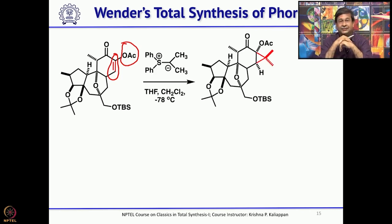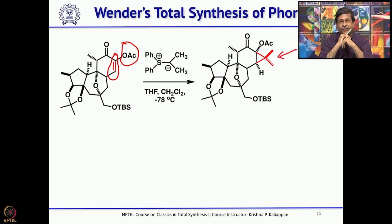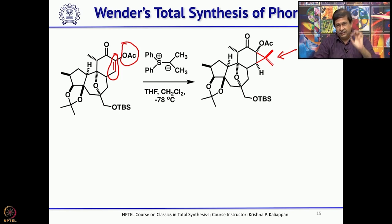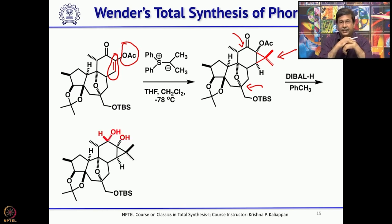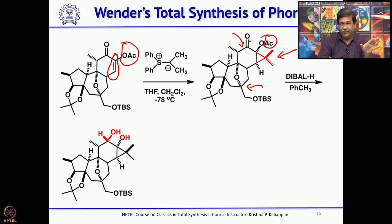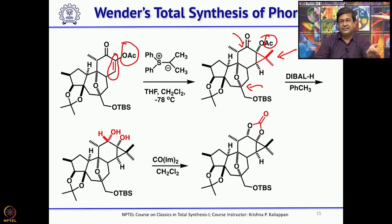The sulfonium ylide reaction was used to introduce the dimethylcyclopropane: this proceeds via a 1,4-addition followed by expulsion of diphenyl sulfide. The dimethylcyclopropane was thus successfully installed along with the acetate. Treatment with DIBAL then reduced the ketone and reductively removed the acetate in one step, giving a syn-diol.